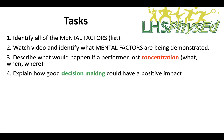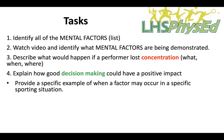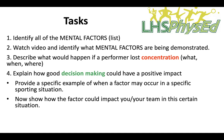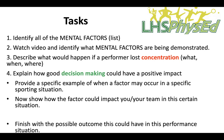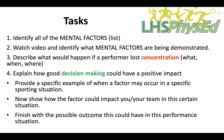Task four: explain how good decision making could have a positive impact on performance. To do this we will use a three-step process. First, provide a specific example of when a factor may occur in a specific sporting situation. Second, show how that factor would then have an impact on you in that situation — if somebody made a good decision, what would the impact be? Third, finish by explaining how that positive decision had a positive impact on the outcome of that particular performance.